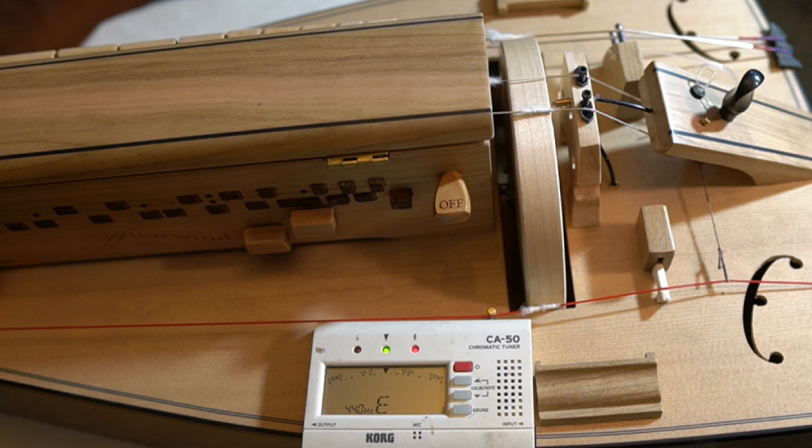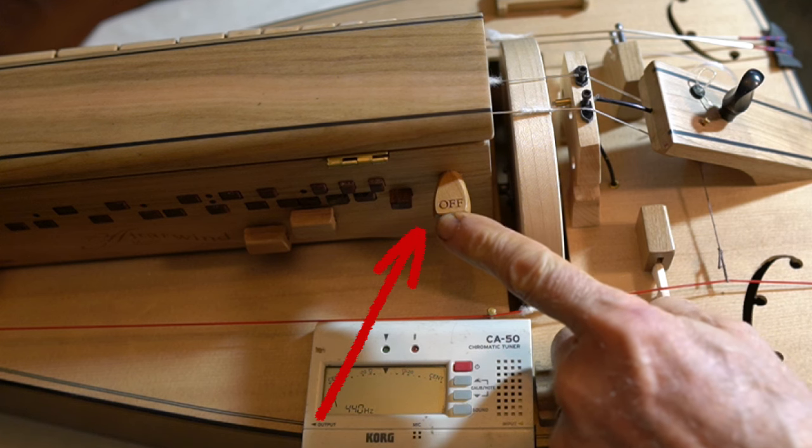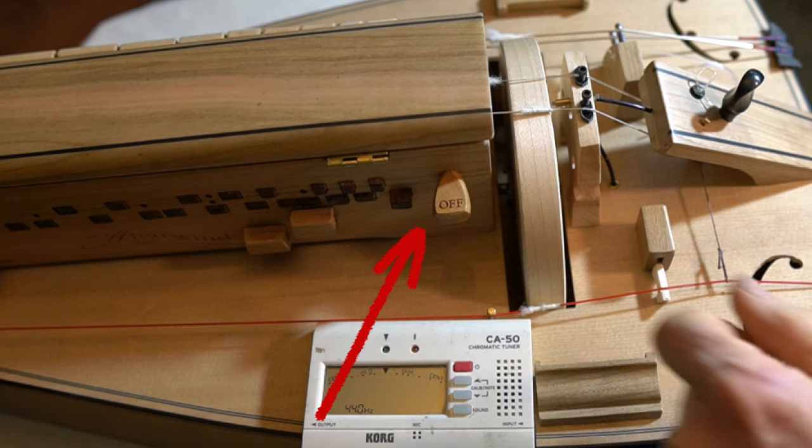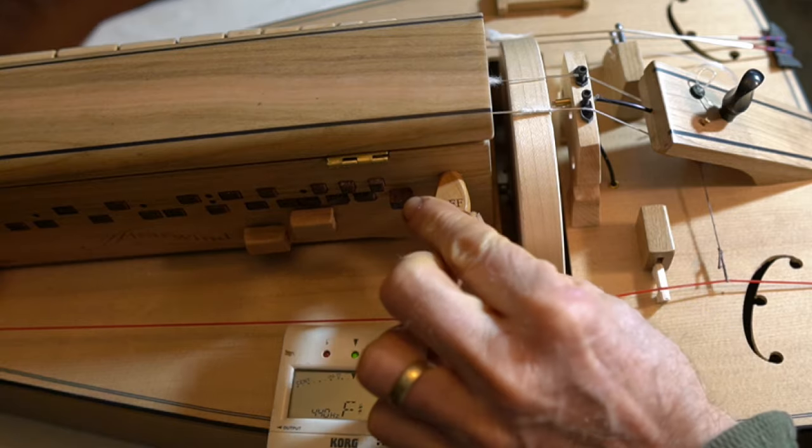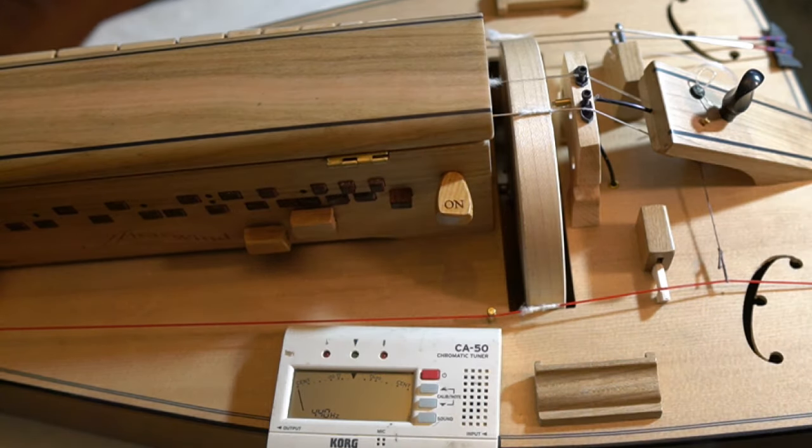First let's talk about how to turn these melody strings on or off. As you see we have this little knob protruding which has the word 'off' engraved on it. If we rotate it around so that the word 'on' is faced up, now both these strings are on the wheel.